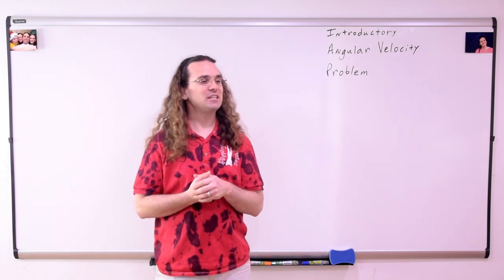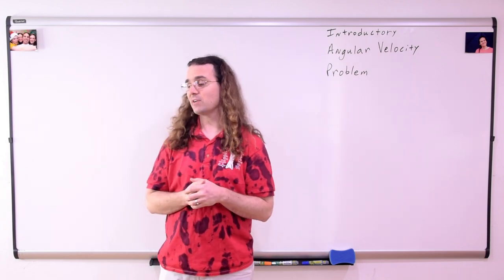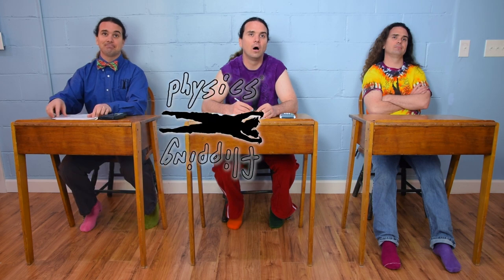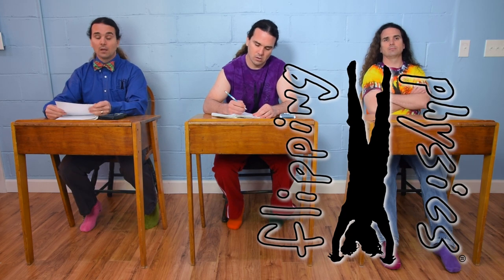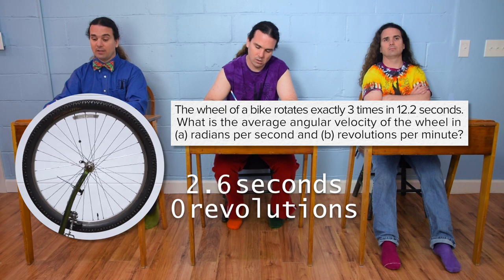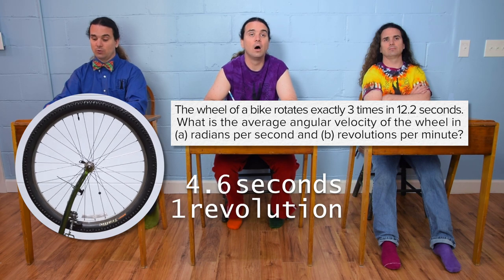Good morning. Billy, could you please read the problem and Bo, could you please translate? Flippin' physics! The wheel of a bike rotates exactly three times in 12.2 seconds.